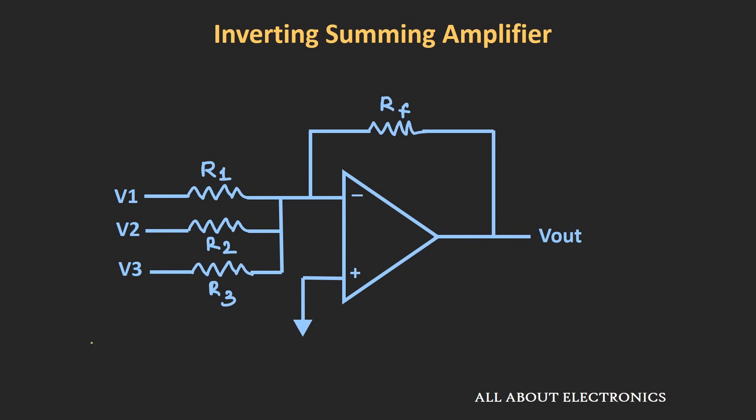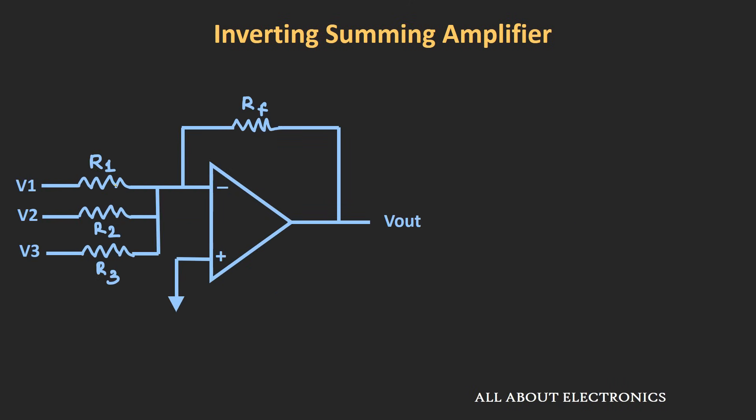First we will see the inverting summing amplifier, where we apply multiple inputs to the inverting input terminal, and find the expression of the output voltage in terms of the different input voltages. As you can see, we have applied input voltages V1, V2, and V3 to the inverting terminal via resistors R1, R2, and R3.